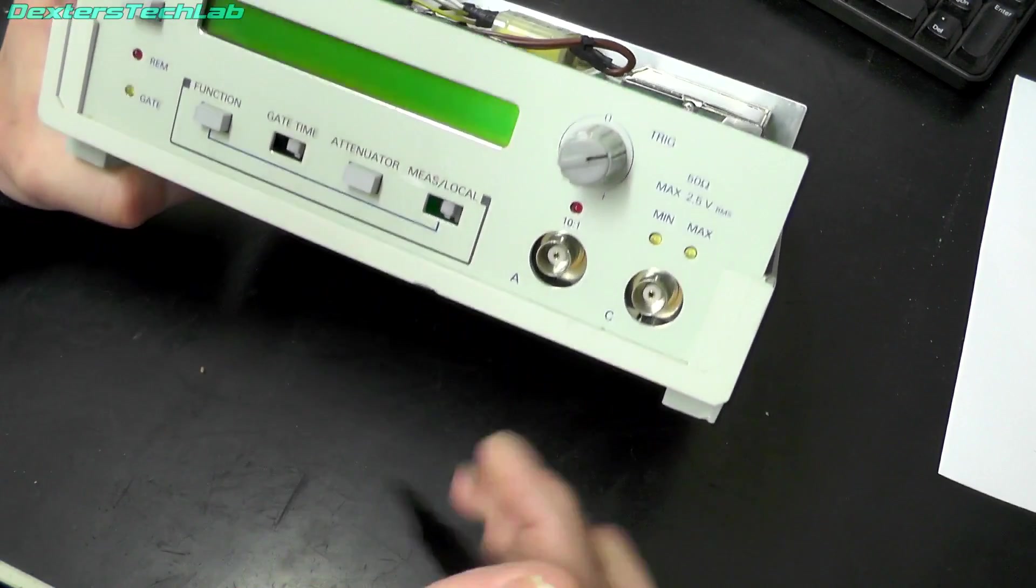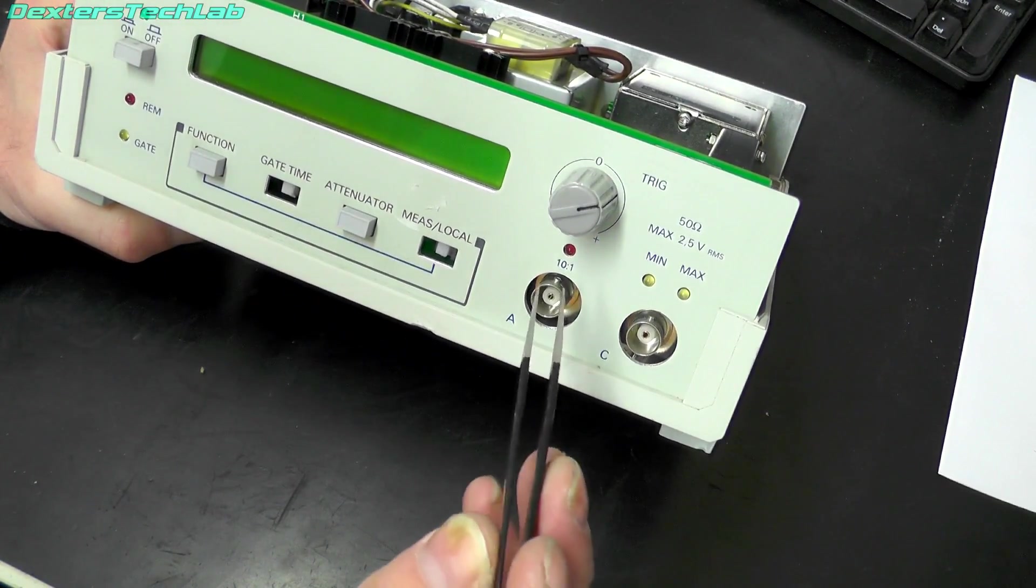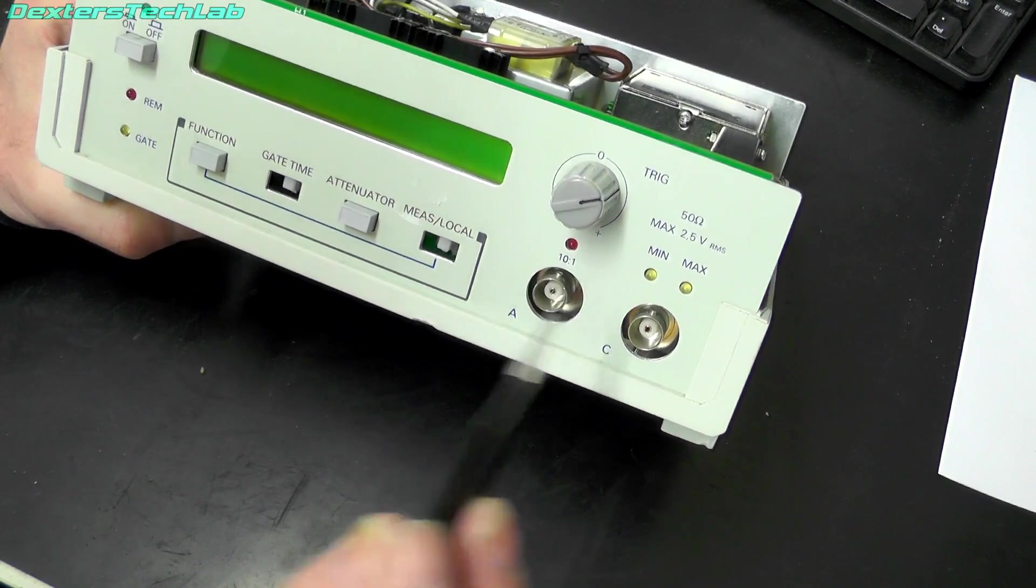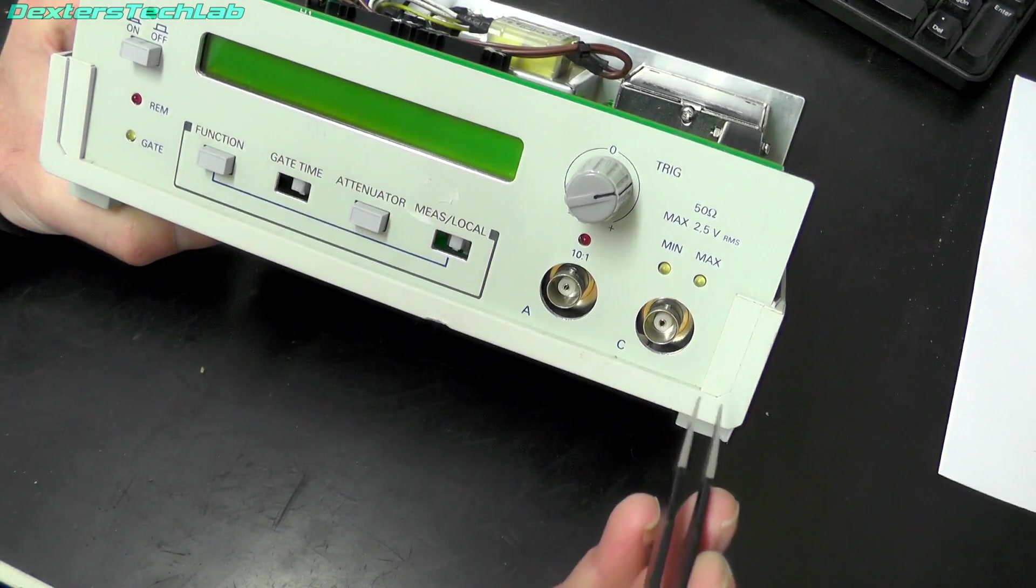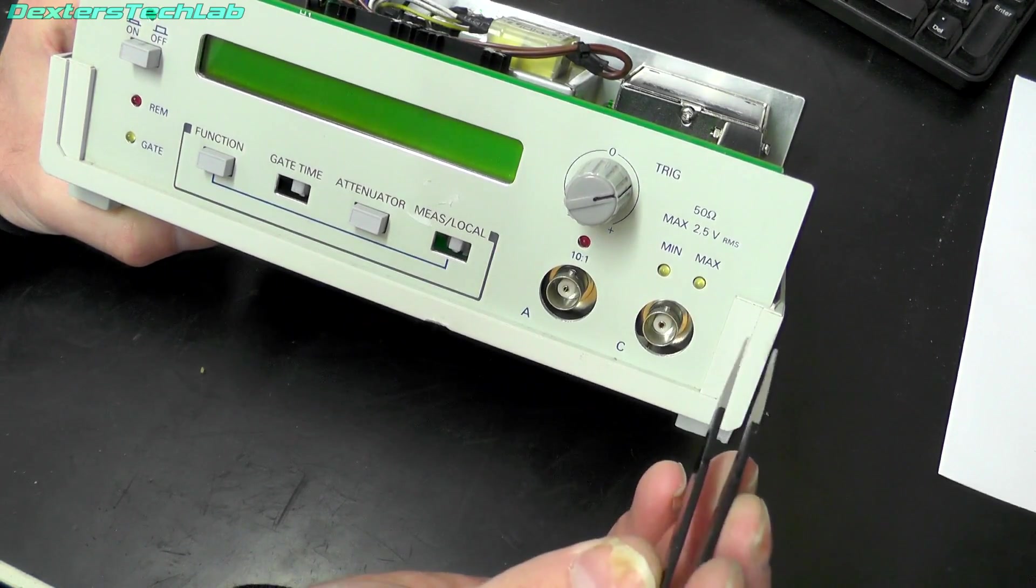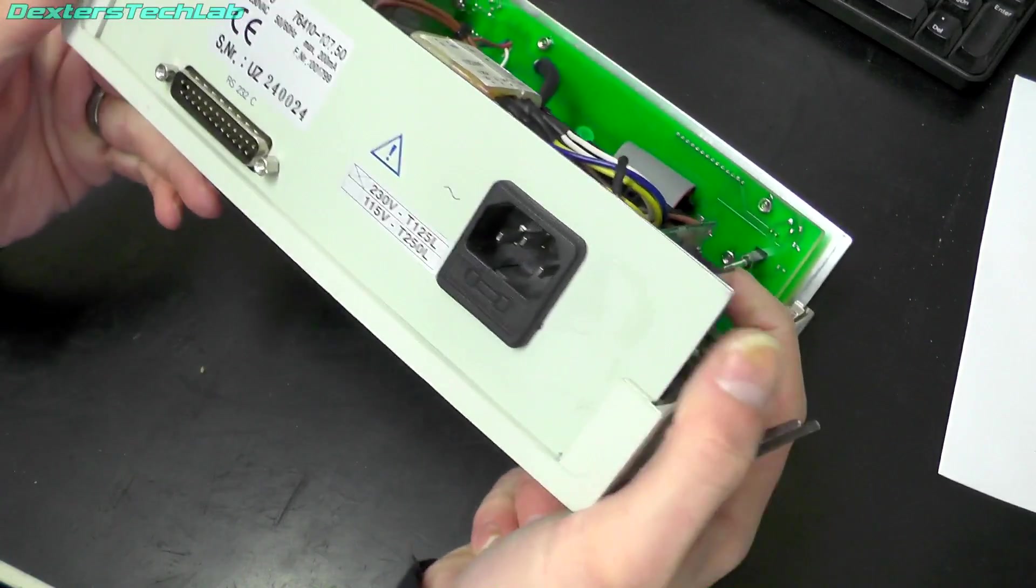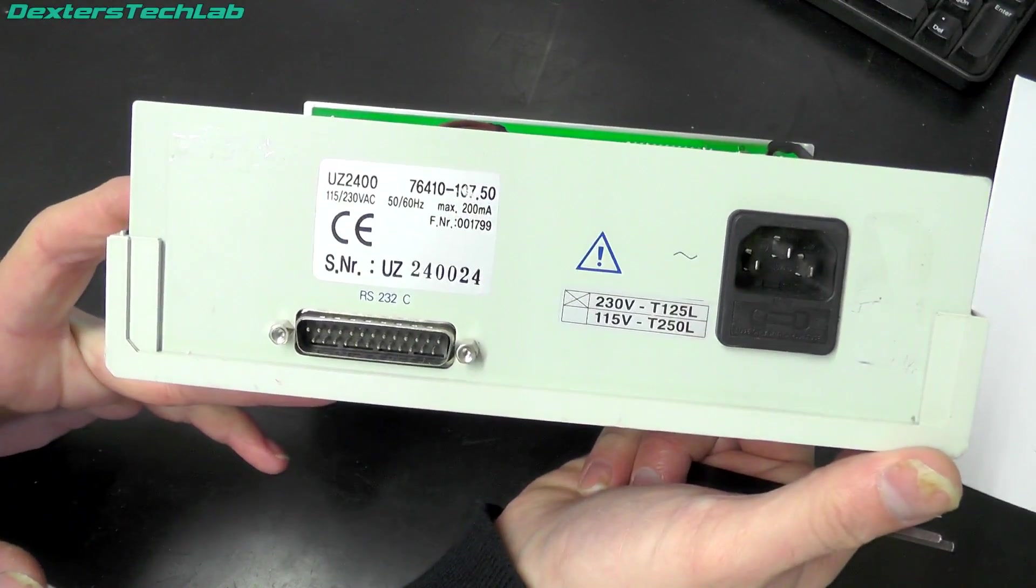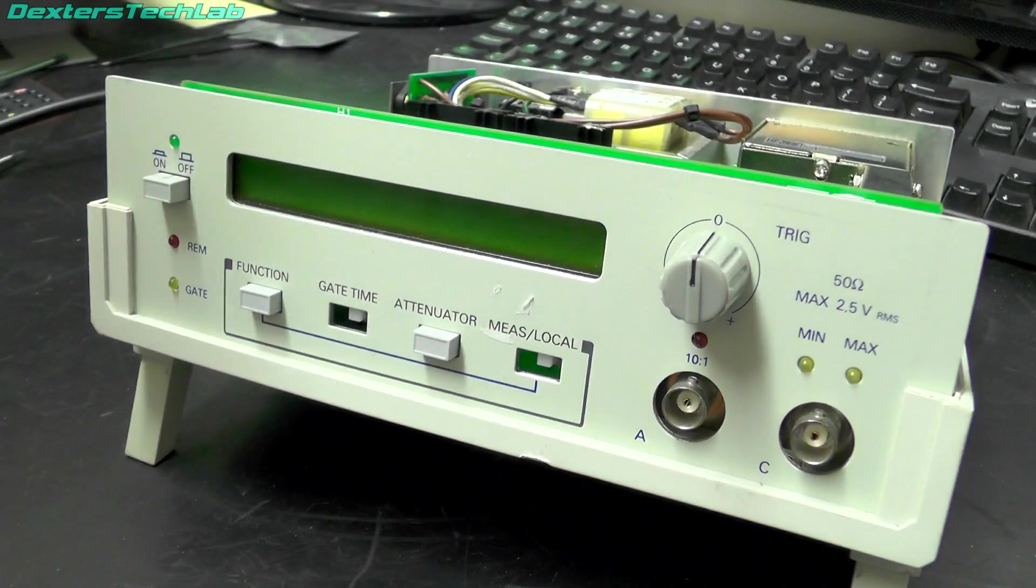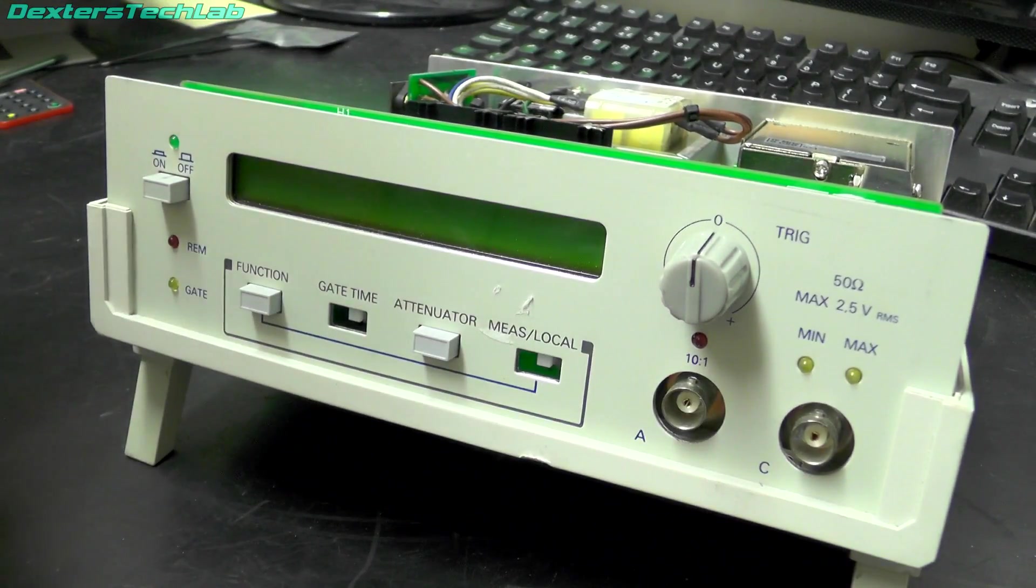We've got a trigger control knob there. We've got channel A, which looks like it might have a 10 to 1 attenuator on it. Channel C with some LEDs min and max. And that's about it. So yeah, not a lot on the front. On the back we've just got the power input and RS232. Right, let's power this on and see what we get.